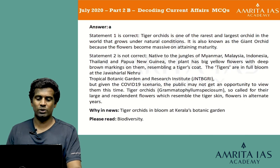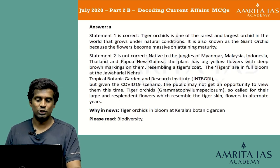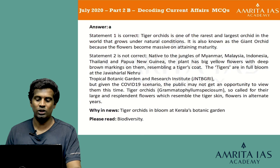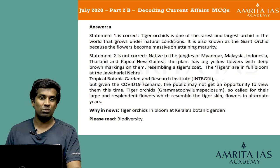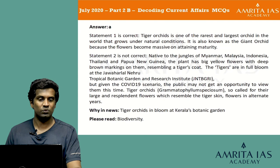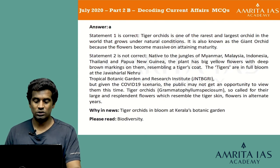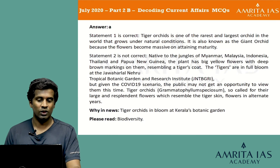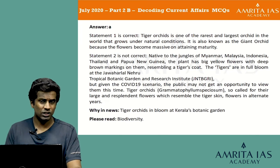The answer is A. Statement 1 is correct — tiger orchid is one of the rarest and largest orchids in the world that grows under natural conditions, also known as the giant orchid because its flowers become massive on attaining maturity. Statement 2 is not correct because the tiger orchid is native to the jungles of Myanmar, Malaysia, Indonesia, Thailand and Papua New Guinea. The plant has big yellow flowers with deep brown markings resembling a tiger's coat, which is why it is called the tiger orchid. It is also known as Grammatophyllum speciosum, and flowers in alternate years.